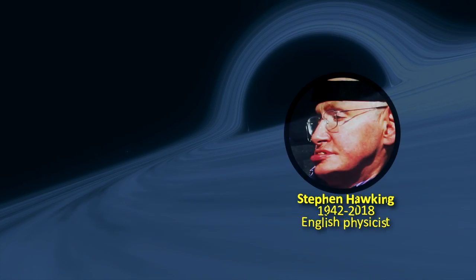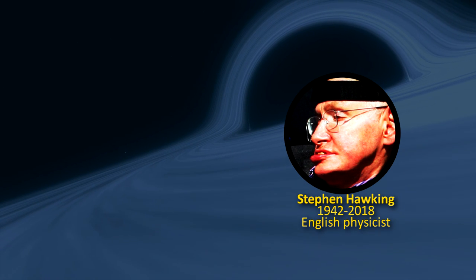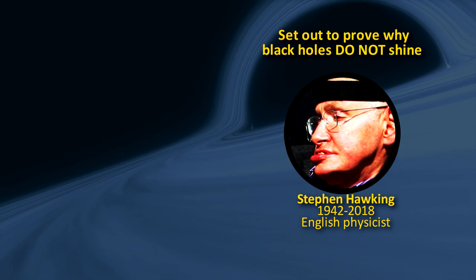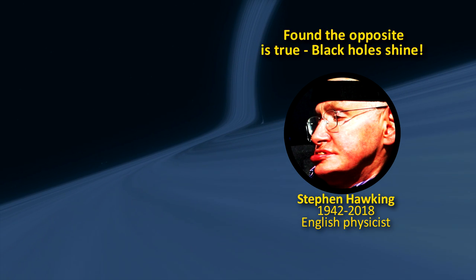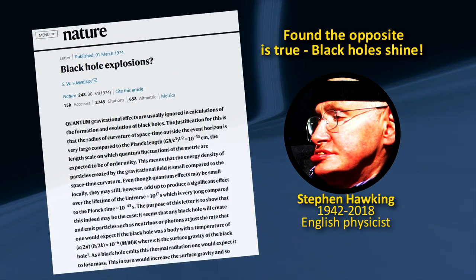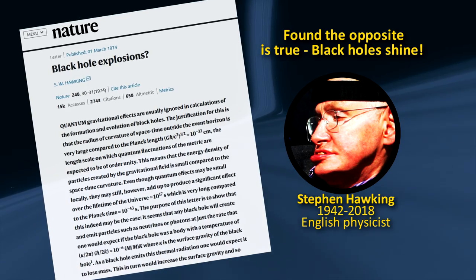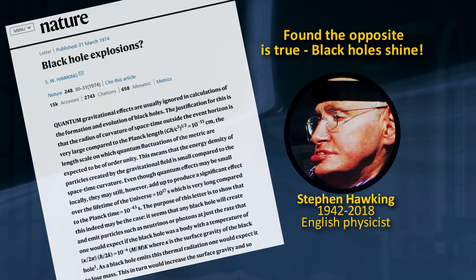When Stephen Hawking saw these ideas, he found the idea of shining black holes to be preposterous. He set out to prove why they would not shine. But when he applied the laws of quantum mechanics to general relativity, he found the opposite to be true. He realized that stuff can come out near the event horizon of a black hole. And in 1974, he published a paper where he outlined a mechanism for this shine. So what was the mechanism he outlined that would allow black holes to emit photons?